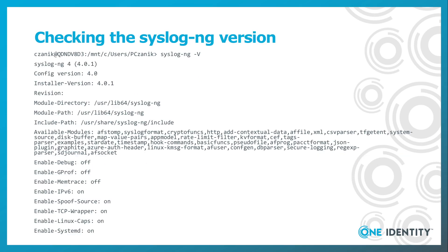Before finishing this part of my syslog.ng tutorial, I want to show you a syslog.ng command line option. Using minus capital V, you can get the syslog.ng version, along with lots of other practical information. You can see the directory where syslog.ng modules are installed, the path for the syslog.ng configuration library, the list of available modules, and a number of build-time options, like Linux compatibility support.